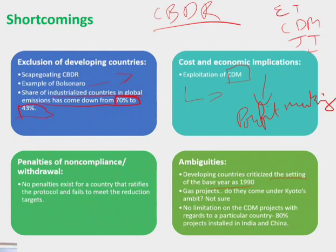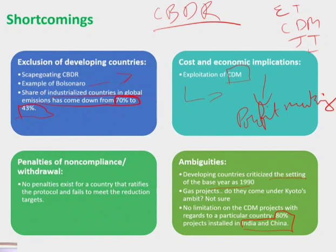Also, not only oil burn or gas burning carbon emissions are capitalized. For example, gas projects — do they come into the Kyoto Protocol with any surety? Nobody knows. Furthermore, CDM projects in developing countries — in what conditions are they operating? There is no effort to confine them. This was also very problematic. We have seen that 80% of CDM projects are in India and China. These were the shortcomings related to the Kyoto Protocol.